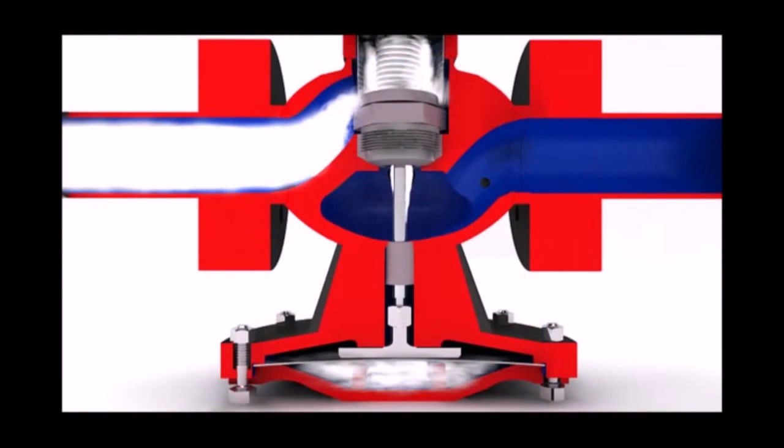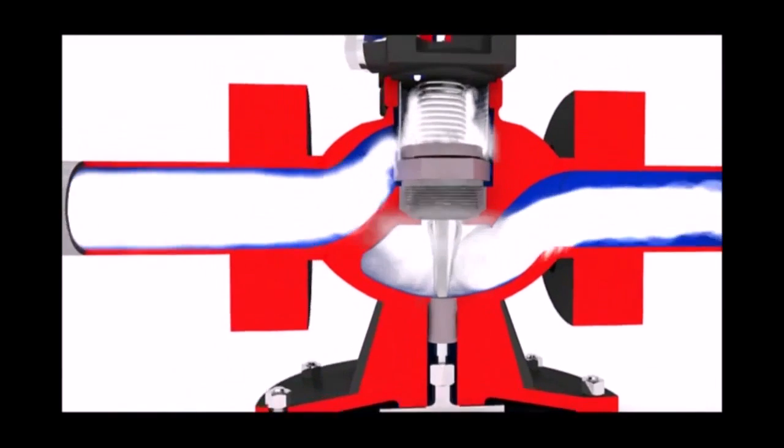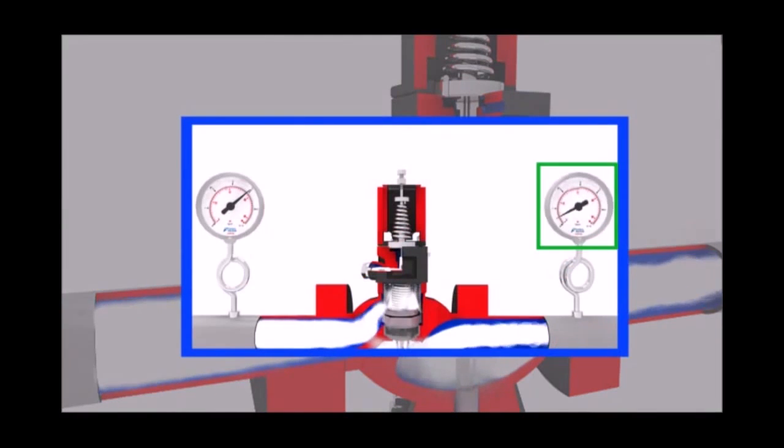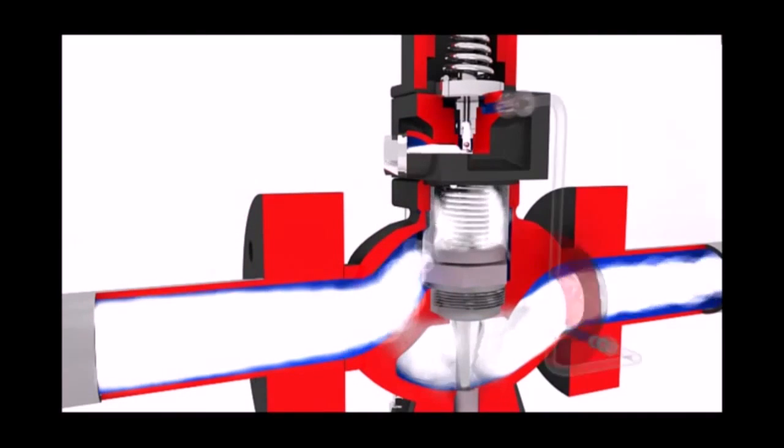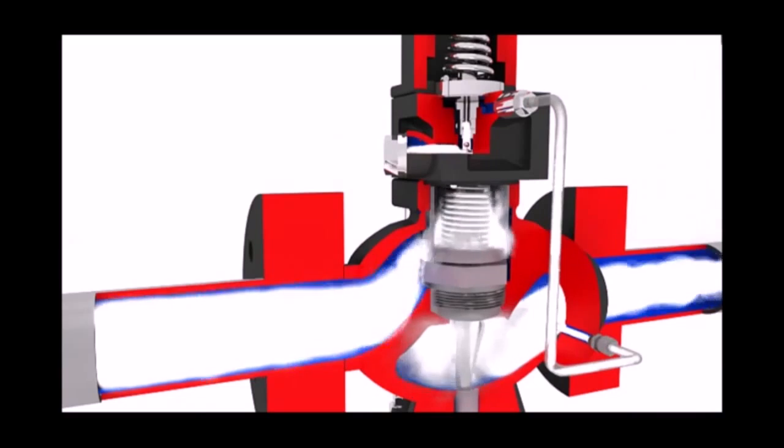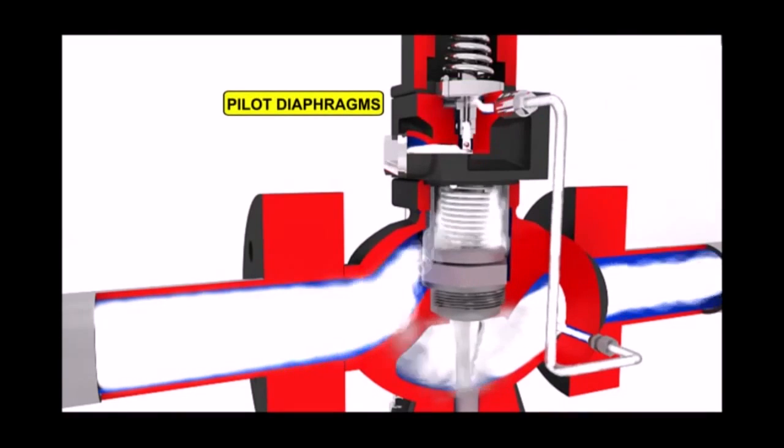Now steam starts flowing to the downstream line through the main valve opening. Steam flow through the main valve increases the downstream pressure. The downstream pressure acts through the balancing or feedback line below the pilot diaphragms.